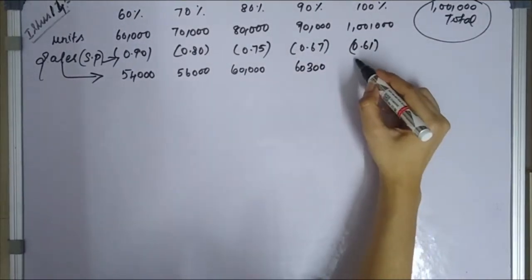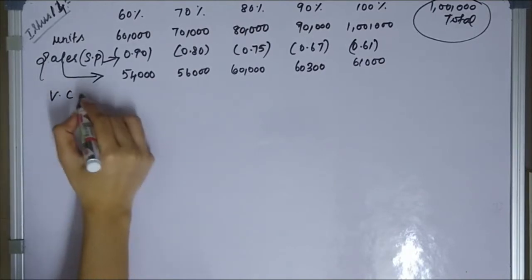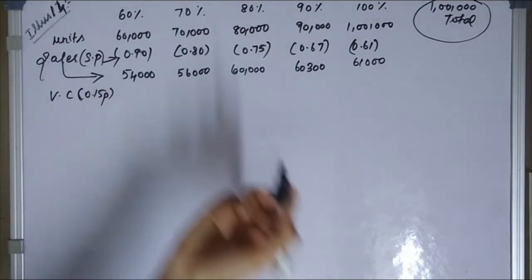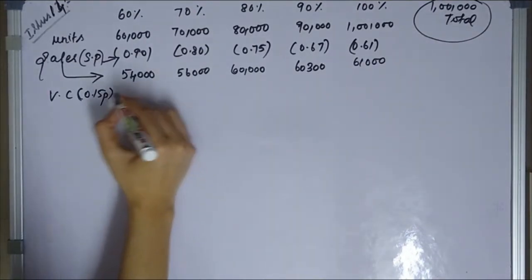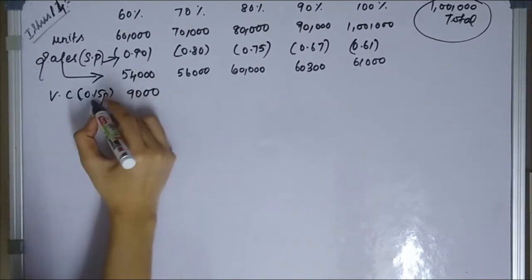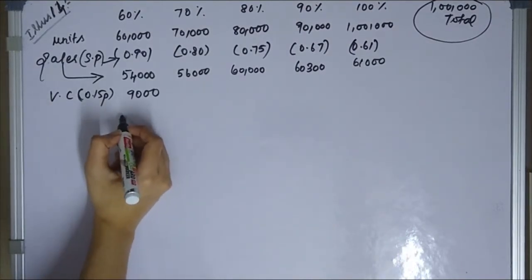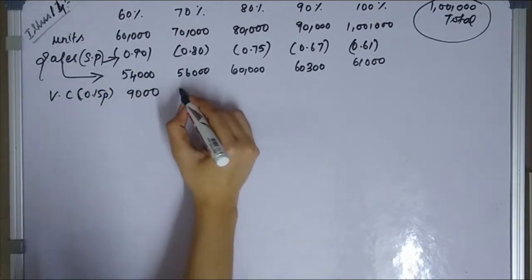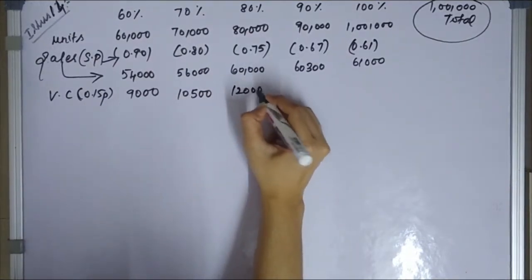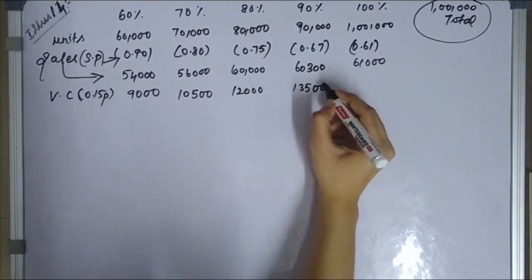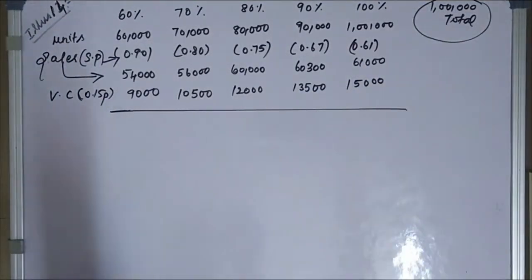The variable cost column is filled in at 0.15 per unit for each capacity level — 0.15 consistently across all five levels from 60% through 100%.